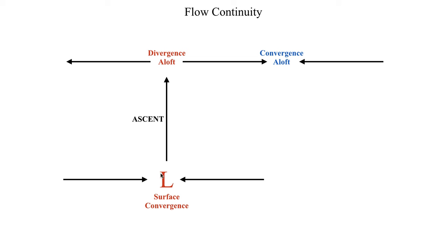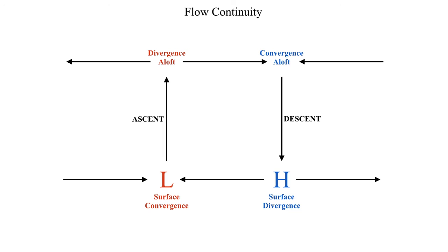On the flip side, if we have convergence aloft — air colliding at an upper level — the wind mostly has to go down, since it can't penetrate far into the stratosphere. Convergence aloft therefore produces descending or sinking motion. To maintain continuity, this means we have high pressure and divergence at the surface, where sinking air spreads outward from the center of a high pressure or anticyclone.